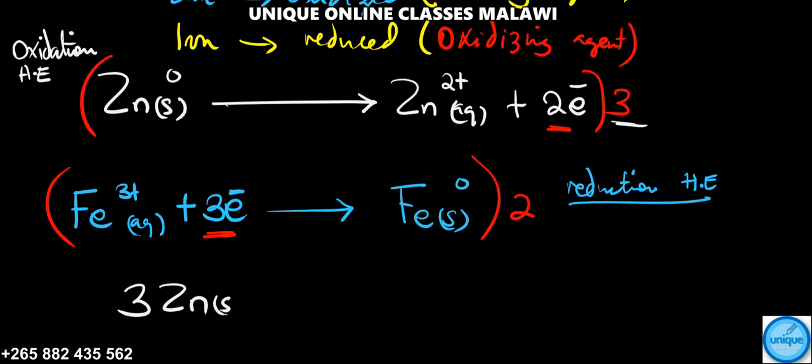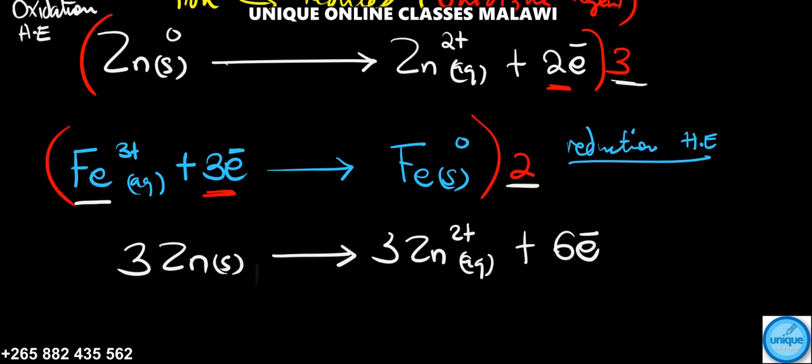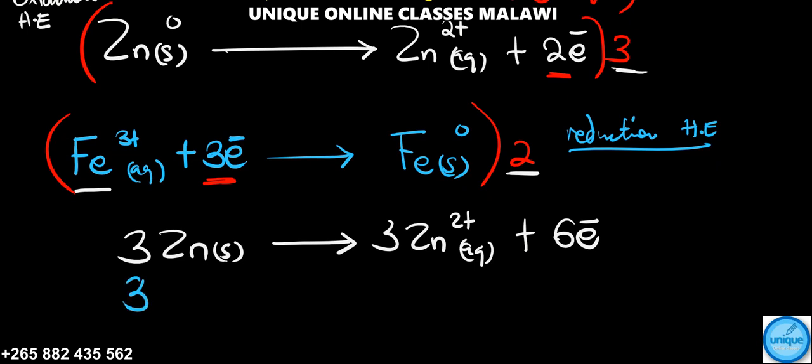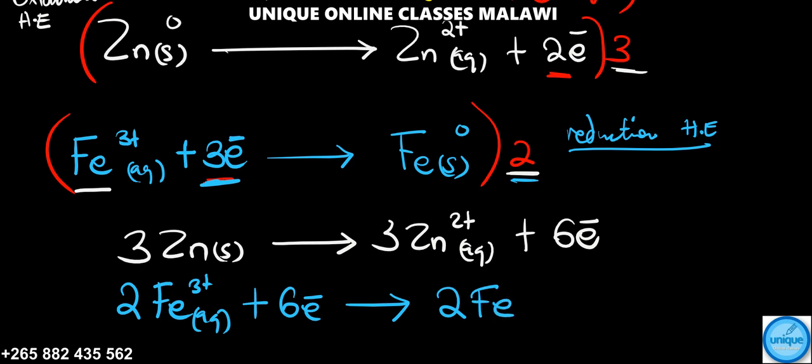If you multiply by 3: 3Zn solid gives 3Zn²⁺ aqueous plus 6 electrons. Then 2Fe³⁺ aqueous plus 6 electrons gives 2Fe solid.